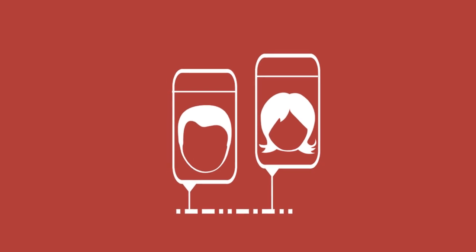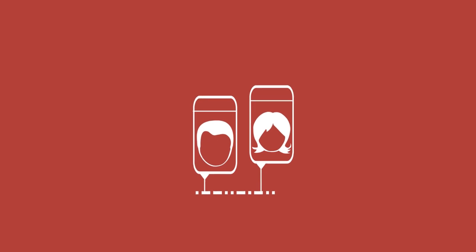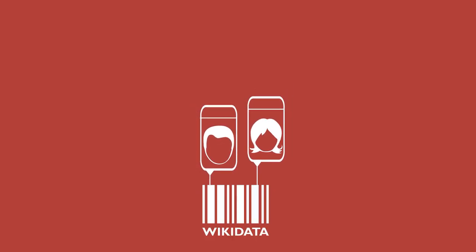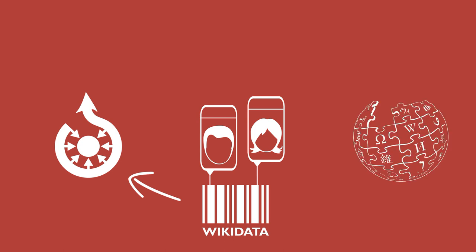The timeline is powered by linked data which has been shared openly by the National Library over the last couple of years, and it's stored on Wikidata. Here the data has been enriched by the Wikidata community and linked to other useful resources. Images for the timeline come from Wikimedia Commons, including thousands shared by the National Library of Wales. Each entry for the Dictionary of Welsh Biography has been linked to the relevant Wikipedia article in English and in Welsh.